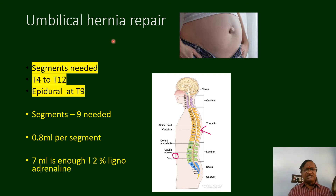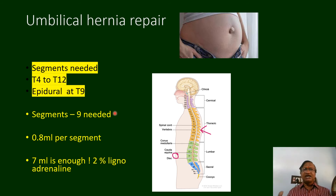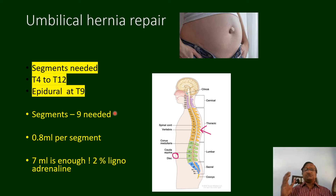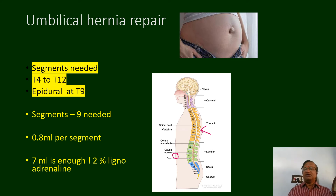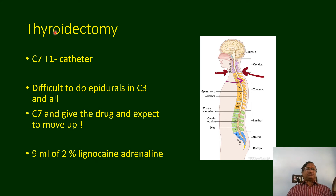For the same umbilical hernia surgery with a lumbar epidural catheter, the sacral segments are likely to be blocked as well, and to achieve a T6 level we may need to give 15 to 18 ml. For thyroidectomy at C7, give the drug and expect it to move up; 9 ml of 2% lignocaine is enough since we need to block around 10 segments — 7 to 9 ml suffices.